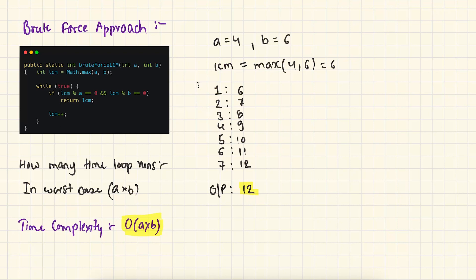Let's understand this code with an example. Let's quickly dry run this code and see how it works. Let's say the value of A is 4 and B is 6, and the LCM is equal to maximum of 4 and 6, which is 6. We run an infinite loop and in each iteration we increment the value of LCM. In the first iteration, the value of LCM is 6. We check if 4 and 6 divide 6. We get false, so we do nothing.